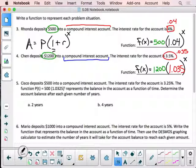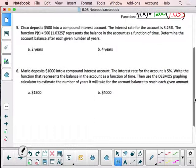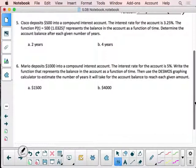Now, number 5, Cisco deposits $500 into a compound interest account. So, $500, and then they give us the function right here, because they say it's at a rate of 3.25%. 3.25% and $500. Notice they give me the function right here. They say that p of t is equal to 500 times 1.0325 to a power of t. They've given me the function. They wrote it for me. And all they're asking is, determine the account balance after each of the given number of years. So, they are basically giving me, they gave me the function, and they're saying, hey, listen, the number of years goes right there. So, put 2 in there.